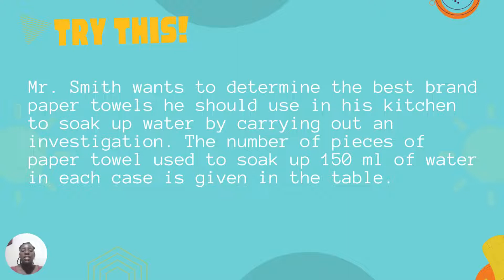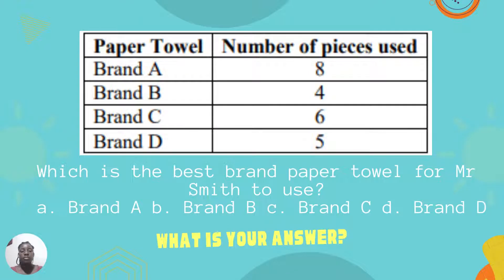Mr. Smith wants to determine the best brand of paper towels he should use in his kitchen to soak up water by carrying out an investigation. The number of pieces of paper towel used to soak up 150 milliliters of water in each case is given in the table. The paper towels are brand A with eight pieces, brand B with four pieces, brand C with six pieces, and brand D with five pieces. Which is the best brand paper towel for Mr. Smith to use? Is it brand A, brand B, brand C, or brand D?